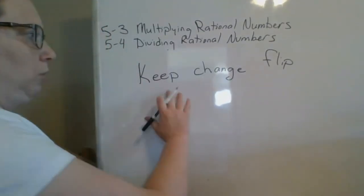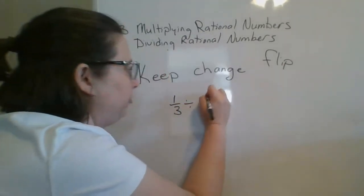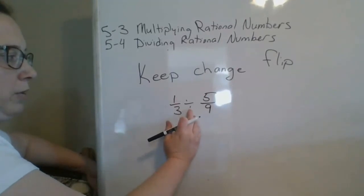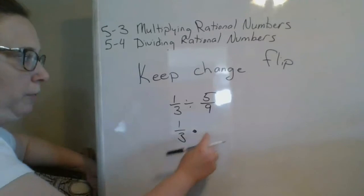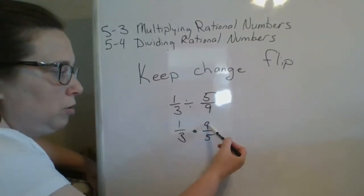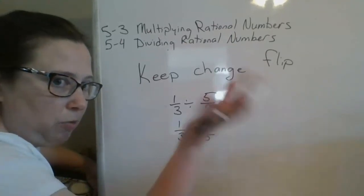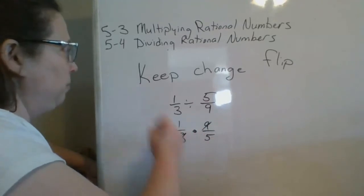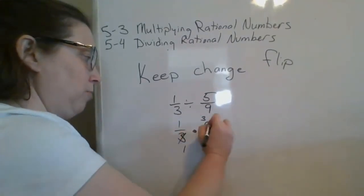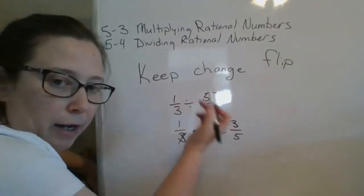Now on to actually dividing. We're keeping, we're changing, and we're flipping. Our first example is 1 third divided by 5 ninths. Keep means the first fraction stays the same. Change means we're going from division to multiplication. And flip means we find the multiplicative inverse of the second fraction by moving the denominator to the numerator and the numerator to the denominator. Now I multiply: I have a 3 as a factor here and here, no other common factors, so I multiply across. My answer is 3 fifths.